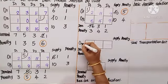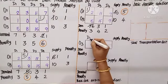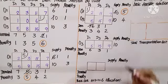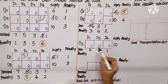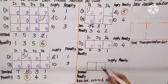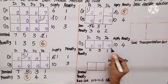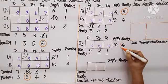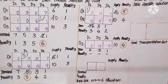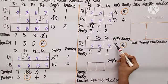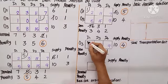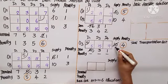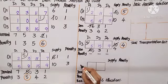We are left with O3 and columns D1, D3, D4. Finding the penalty: O3 row — minimum is 5, next is 9, so penalty is 4. Single-cell columns have no penalty. The highest penalty is 4, so we select O3 row. In O3, the minimum cost is 5. Supply is 6 and demand is 10 — the minimum is 6, so we allocate 6. This becomes 0, and demand becomes 10 minus 6, which is 4.